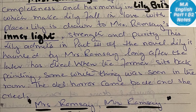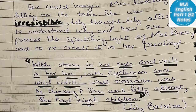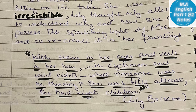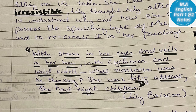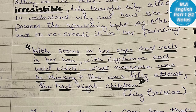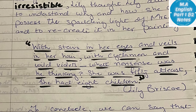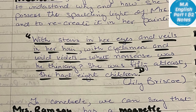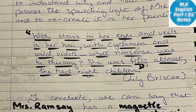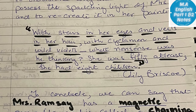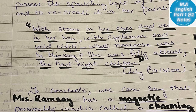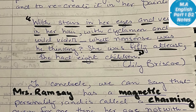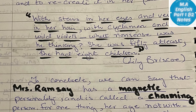Lily is haunted by Mrs. Ramsey long after the latter has died. When Lily sits back painting, she imagines Mrs. Ramsey — finding her irresistible and very attractive. Lily attempts to understand why and how she can possess the sparkling light of Mrs. Ramsey and to recreate it in her paintings.